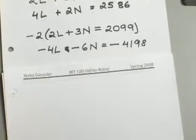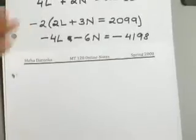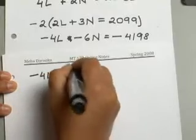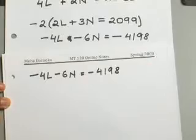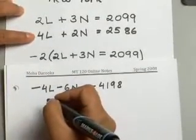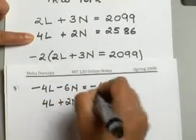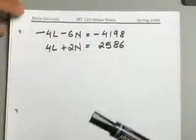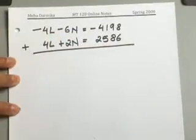Let's go ahead and rewrite this problem here. So now our first equation looks like negative 4L minus 6N equals negative 4,198. And our second equation, of course, hasn't changed. It stays the same. So that will be 4L plus 2N equals 2,586.